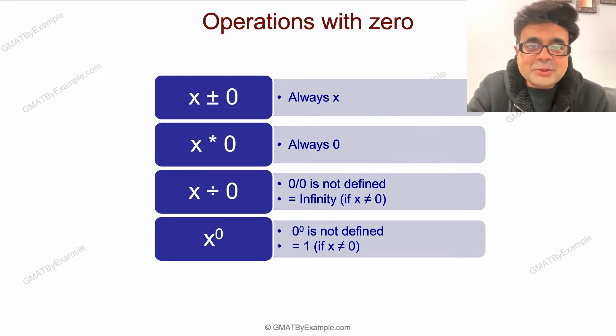Zero to the power of zero is not defined and actually out of the scope of GMAT. So if you are getting a situation where you're getting zero to the power of zero, there is either something wrong with the question or with your approach.